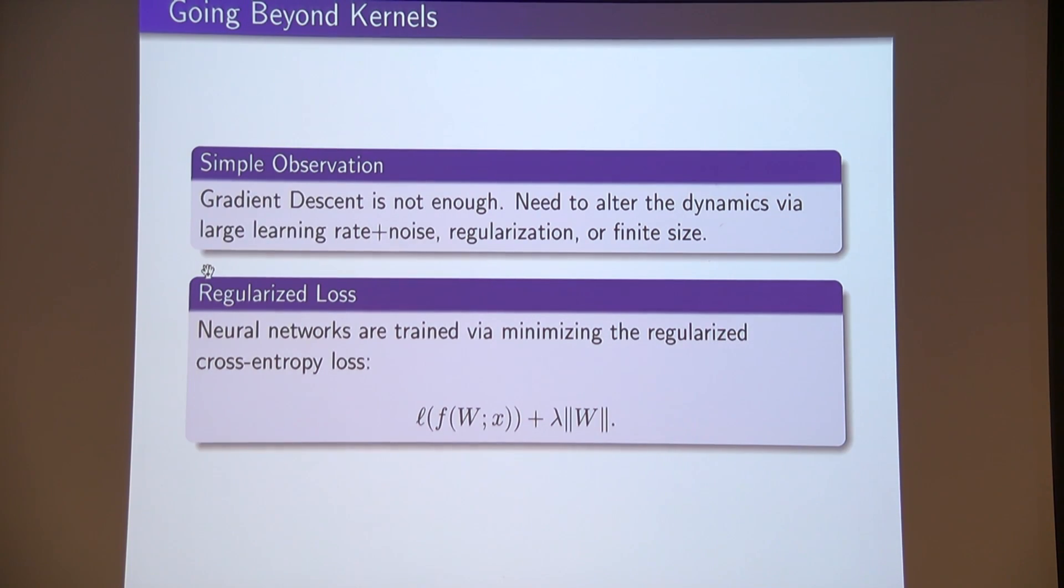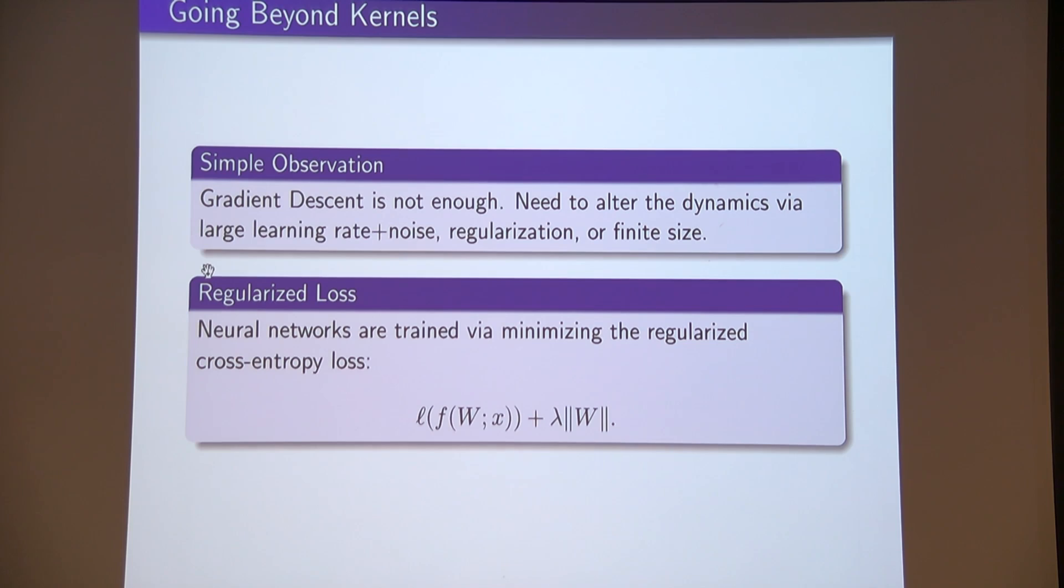So how to go beyond kernels? We already have a theorem that says, if you're wide enough, then gradient descent behaves like a kernel method. So you have two choices. You can analyze the case when it's not very wide. That turns out to be very hard. So the easier thing to do is to change the problem a little bit. You need to alter the dynamics. There's many ways to do this. You can use a large learning rate with noise. You can use regularization. What I'm going to talk about today is using regularization. Very simple. I'm going to look at the cross entropy loss plus weight decay.